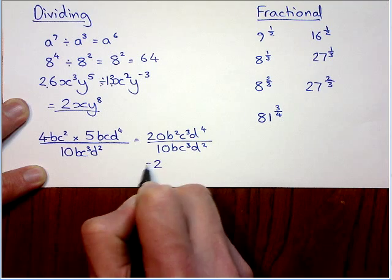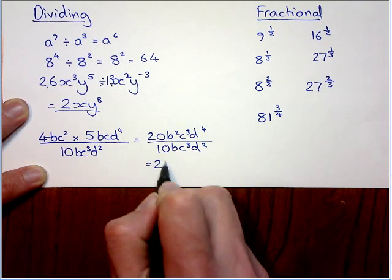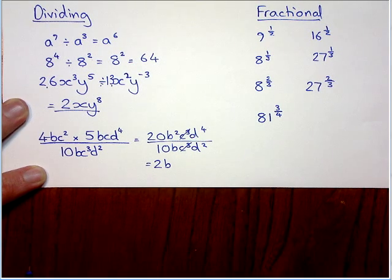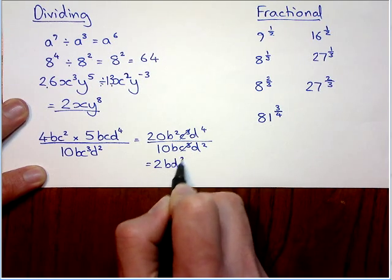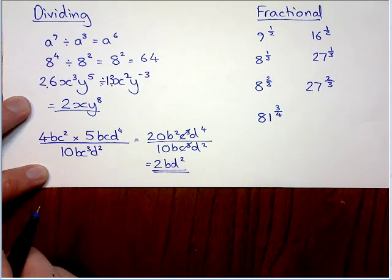20 divided by 10 is 2. b squared divided by b, well, 2 take away 1 is just a single b. They will actually cancel each other out. They will disappear. And 4 take away the 2 will be d squared. And there we have it. So that's multiplying and dividing.